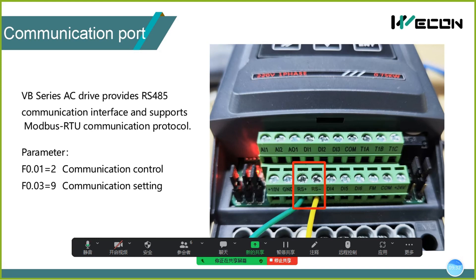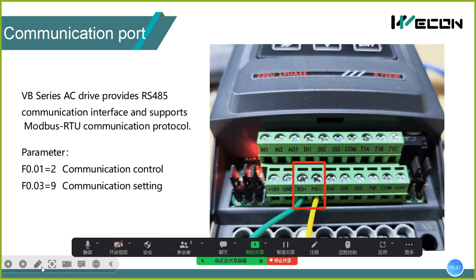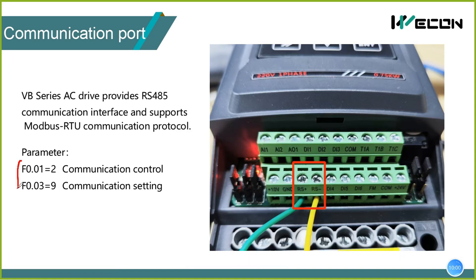Before using ModBus communication, you need to set the inverter parameters F0.01 and F0.03. These parameters control communication control and communication settings. Then connect HMI or PLC through the RS port on the terminal.